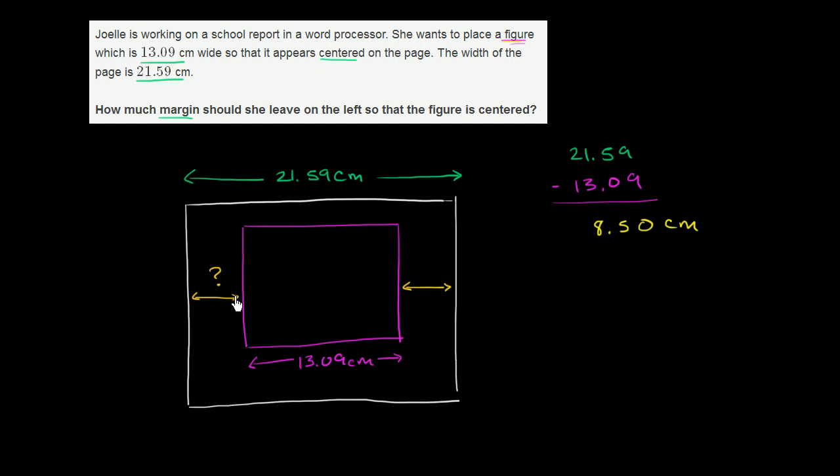Now, if we want to figure out what the left margin should be to center it, we just want to split this evenly between the left and the right margin. So we divide this by 2. If you divide 8.50 by 2, or multiply it by 1 half, either way, you are left with half of 8.50, which is 4.25 centimeters.